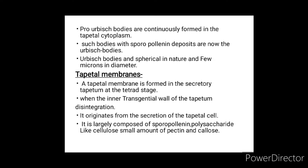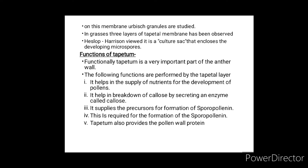A tapetal membrane is formed in the secretory tapetum at the tetrad stage when the inner tangential wall of the tapetum disintegrates. It originates from the secretion of the tapetal cells. It is largely composed of sporopollenin, polysaccharides like cellulose, small amounts of pectin, and callose. Orbicle granules are deposited on this membrane; three layers of tapetal membrane have been observed in grasses.